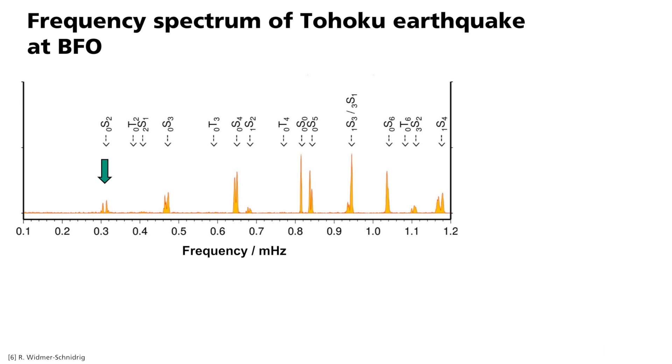0S2 is a fundamental mode. This is how you can tell: n equals 0, l equals 2. This means that what we have here are two node levels, which in this case separate the earth at the equator and in a plane vertical to it.